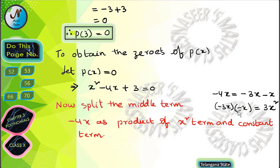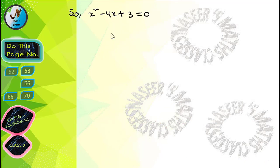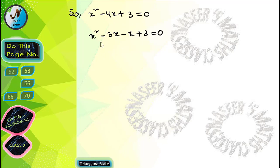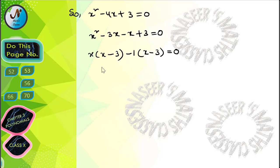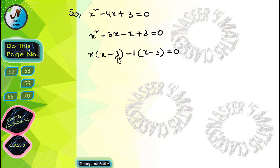We verify: (-3x) × (-x) = 3x², which satisfies the condition. So x² - 4x + 3 = 0 is written as x² - 3x - x + 3 = 0. In the first two terms we take x common, giving x(x - 3).